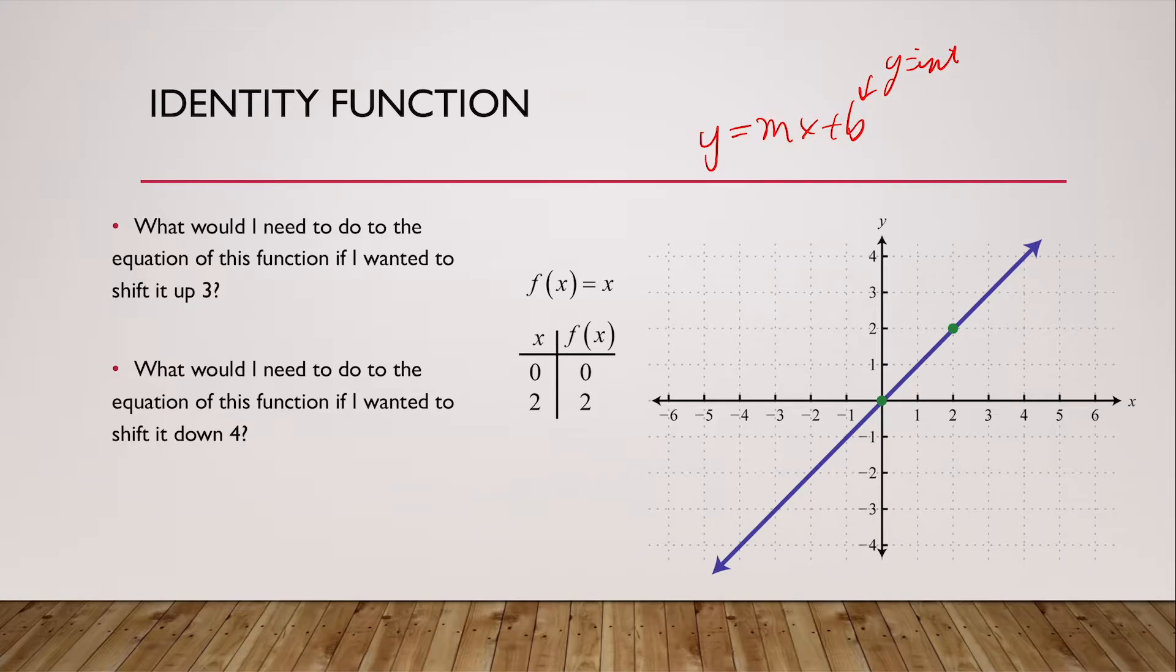My question is, what would I need to do to the equation of this function if I wanted to shift it up three? Right now, my y-intercept is zero. But if I shifted it up three, my y-intercept would be three. I would have to add three to our original equation in order to shift this graph up three. If I did that, we would get something that looks like this.